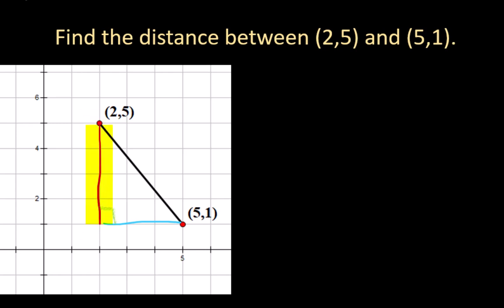This side is 1, 2, 3, 4 units and I could have also figured that out by doing a little bit of subtraction. I know the top number here is 5 and the bottom one right here is 1 because these are the y coordinates and so 5 minus 1 is 4. Now this length 1, 2, 3 is obviously 3 boxes.